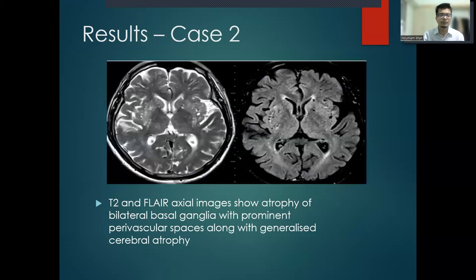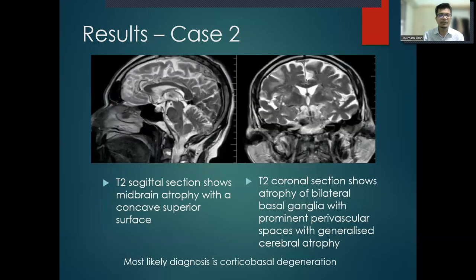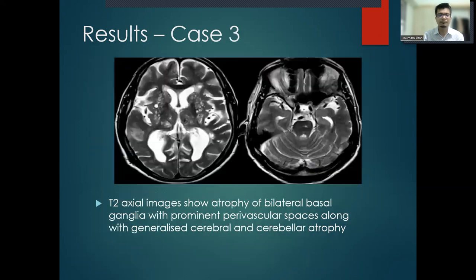Case 2: T2 and FLAIR axial images show atrophy of bilateral basal ganglia with prominent perivascular spaces along with generalized cerebral atrophy. T2 sagittal section shows midbrain atrophy with concave superior surface. T2 coronal section shows atrophy of bilateral basal ganglia with prominent perivascular spaces. The most likely diagnosis is corticobasal degeneration.